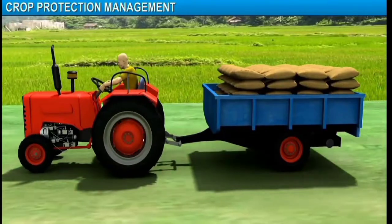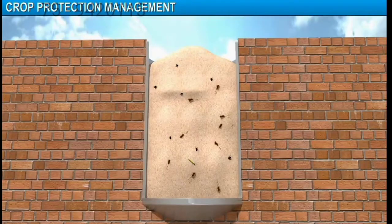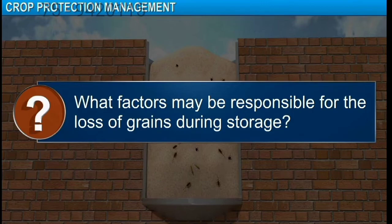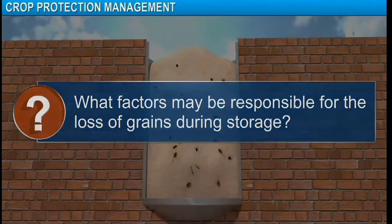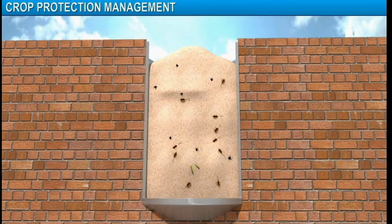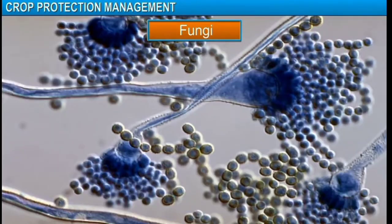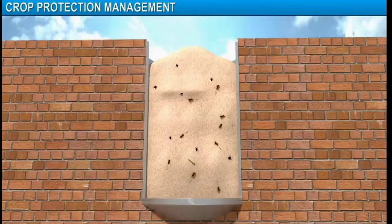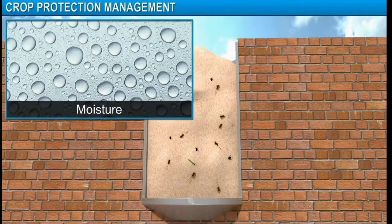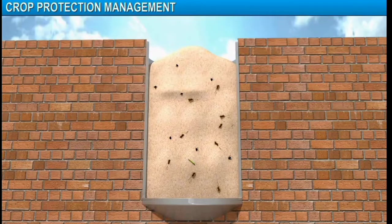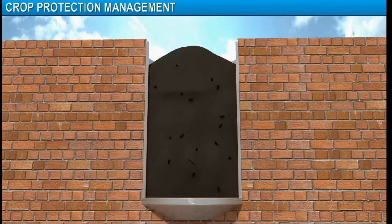After the crops have been harvested and the grains have been stored, they need protection during storage as well. Storage losses in grains are due to biotic factors like insects, rodents, fungi, mites and bacteria. Abiotic factors like inappropriate moisture and temperatures in the storage place also damage grains. These factors lead to loss in weight, poor germinability and discoloration of the grains, which lead to poor marketability.